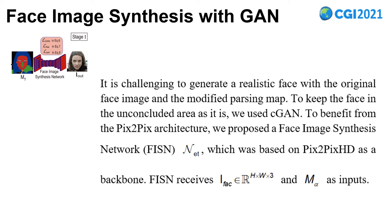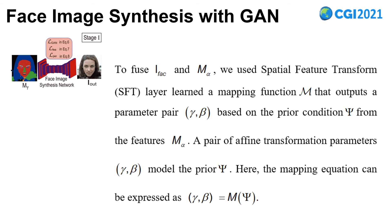FRSN receives the face image I and M_alpha as input. To align M_alpha, we use the special feature transformer layer with a mapping function M that offers parameter parts gamma and beta. Based on the parameter parts gamma and beta, the model operates per sample. The mapping equation can be expressed as: gamma and beta equals M.